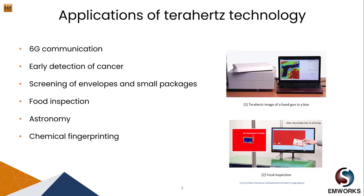Let's look at some areas where terahertz technology is being used. Terahertz is important especially for 6G communication, as it allows for fast transmission of huge amounts of data. Several researchers have already started investigating the terahertz band for 6G. It can also be used for early detection of cancer, scanning of envelopes and small packages, food inspection, astronomy, and chemical fingerprinting. For instance, using chemical fingerprinting, trucks or vehicles carrying explosives can be easily detected. The images on the right show detection of a concealed gun and detection of missing food items such as a chocolate bar.